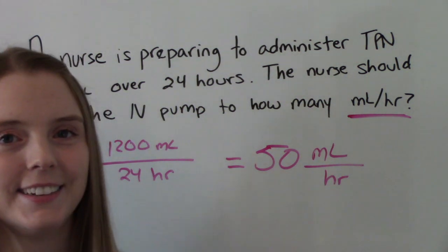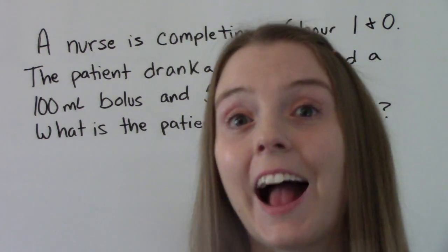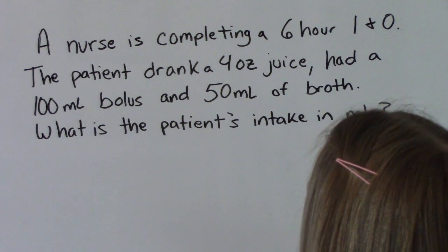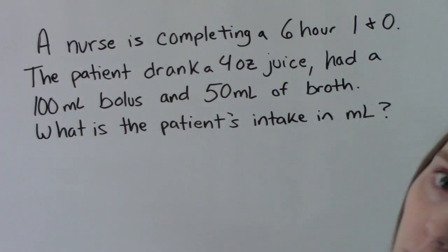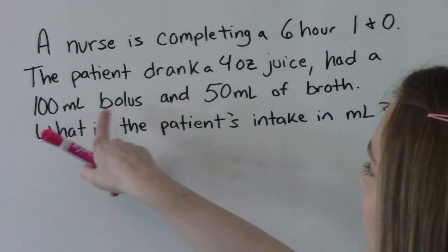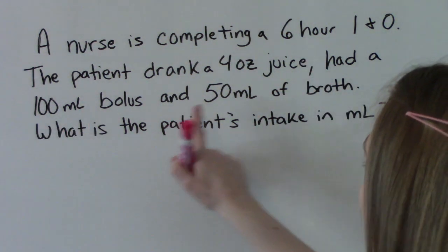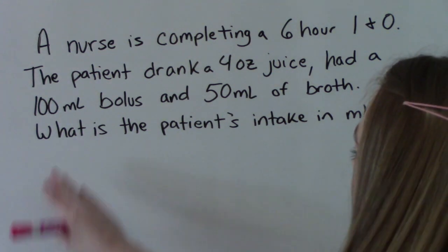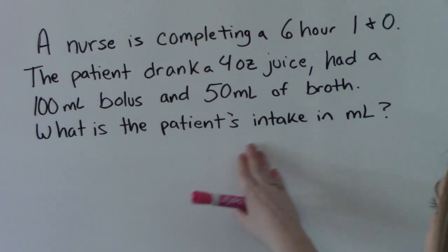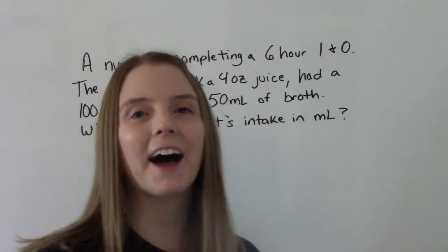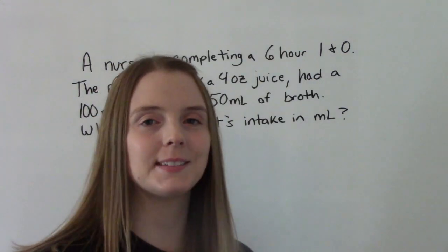Let's try another one. Our second question is an I&O question. The nurse is completing a six-hour I&O on a patient. The patient drank four ounces of juice, had a 100 mL bolus, and had 50 mLs of broth. What is the patient's intake in mLs? So pause it. Now let's work it out and see if you got it right.